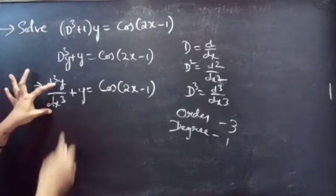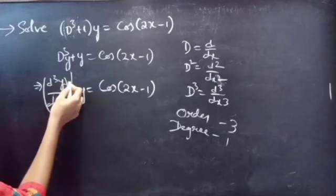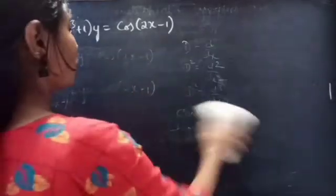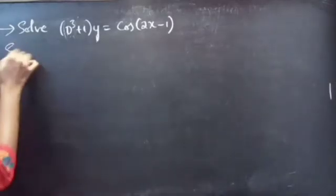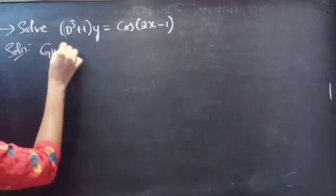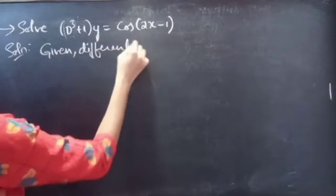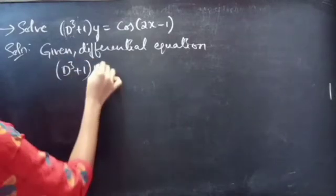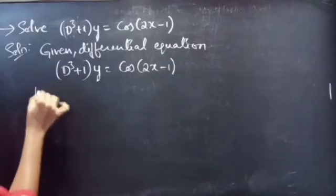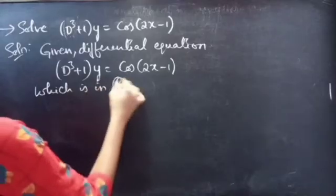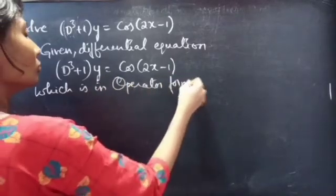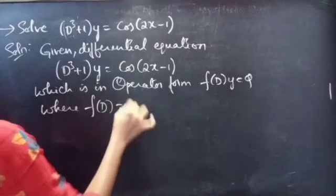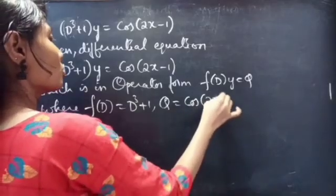The highest derivative is d³y/dx³, so our order is 3 and degree is 1. Coming to the problem: the given differential equation is d³+1 into y equals cos2x - 1, which is in operator form. That is, f(D)·y = Q, where f(D) = D³ + 1 and Q = cos2x - 1.